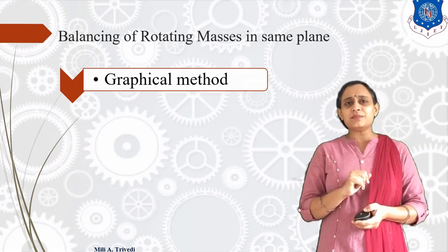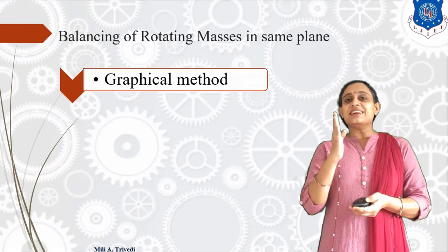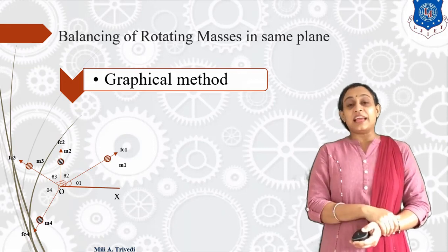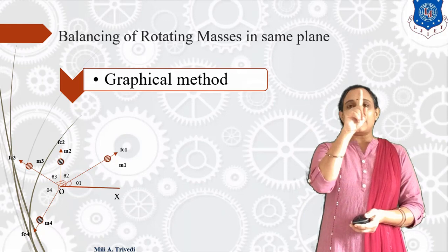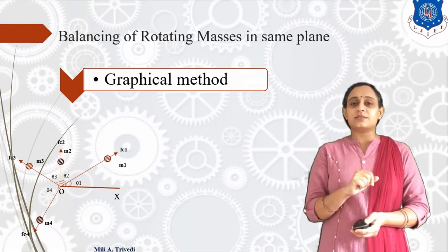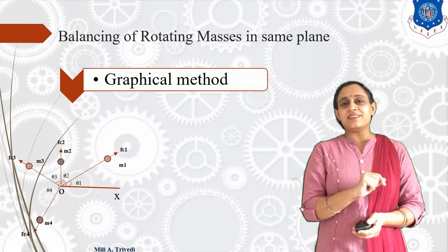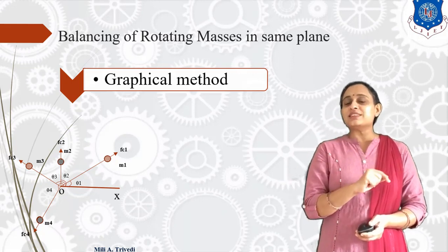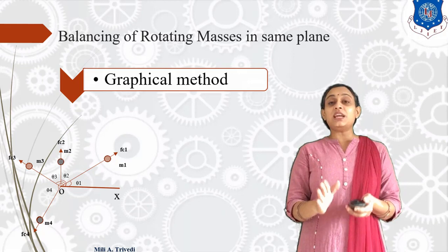Let us study about balancing of rotating masses rotated in the same plane. It is having two methods: one is graphical and the second is analytical. We will study the graphical method. For this graphical method, we have one diagram as you see on the screen. Here you can see the O-X axis and four different masses: M1, M2, M3, M4. Mass M1 is at angle theta 1 from the O-X axis, mass M2 is at theta 2. All angles are considered with respect to the base O-X axis, which we call the axis of rotation.